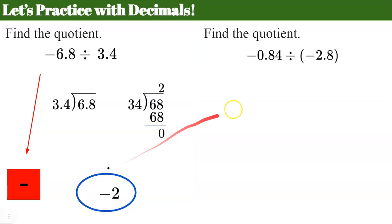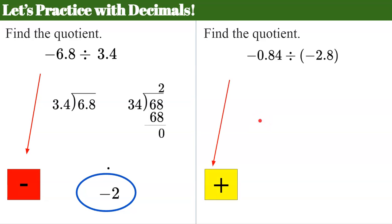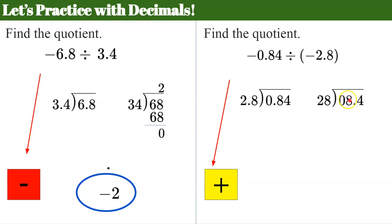Our second problem. I have a negative divided by a negative — same sign — positive quotient. I have 0.84 divided by 2.8. When I move the decimal point one to make this a whole number, I have to move the decimal point one space on the other side as well. 28 doesn't go into 8, so I can have my 0 and my decimal point. 28 goes into 84 three times. 3 times 28 is exactly 84, so I have a 0 remainder, and my answer is positive 0.3.